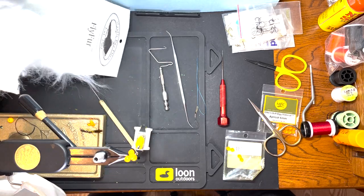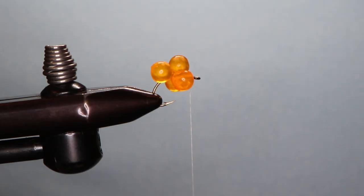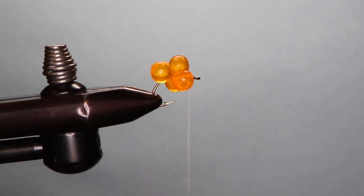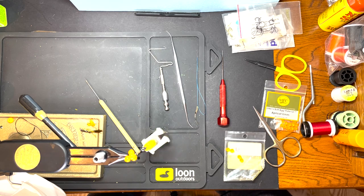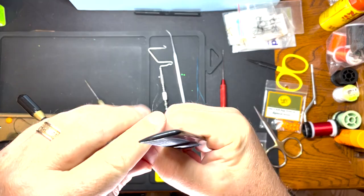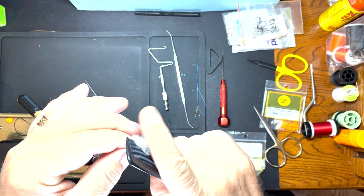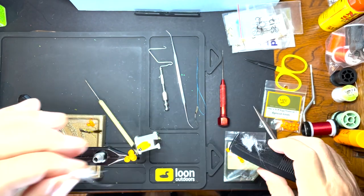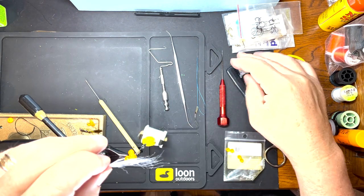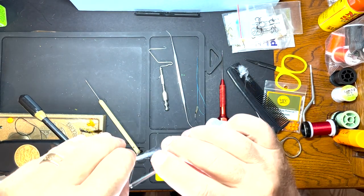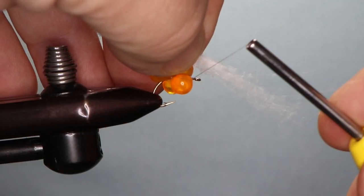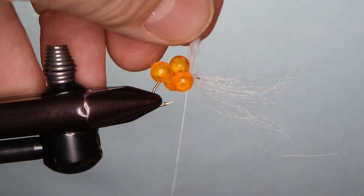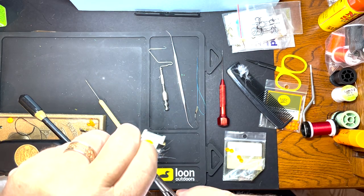Grab some craft fur, just get a pinch of that ready. Take the end of it and comb out the stuff that's underneath. About that much—I'm just going to tie that in like that and snip the bottom part.